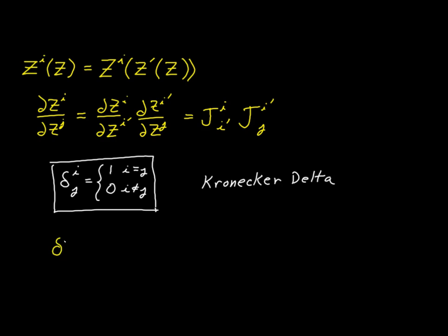With that, we can rewrite our previous expression as: delta_ij equals Jacobian i, i-prime, times Jacobian i-prime, j. To reiterate, we have two free indexes i and j, giving nine expressions. On the right-hand side we have those same two free indexes and nine expressions. In each case we have the dummy index i-prime, meaning each right side will contain three terms where i-prime is one, two, and three respectively, all added together.